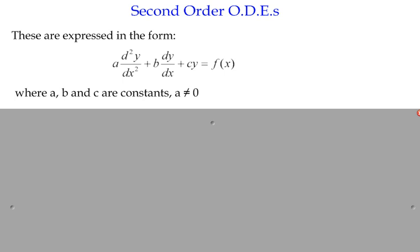We're going to look at how to solve second order differential equations. These are a development of first order ones because in any such equation we've got some function y, an addition of its first derivative, but also some multiple of its second derivative as well. So we've got a sum of terms which include a certain amount of a function, its first derivative, and its second derivative — that's why we call them second order differential equations, and each term has an accompanying constant.